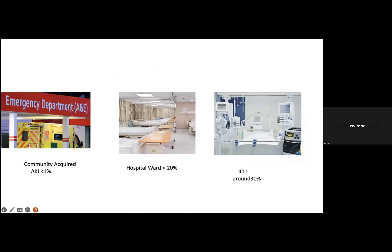We can differentiate acute kidney injury into hospital-acquired and community-acquired. Community-acquired AKI is mainly because of pre-renal causes like dehydration and hypovolemia, and sometimes obstruction. For hospitalized patients, most ICU patients are complicated with acute kidney injury. As clinicians, we should ensure we have early awareness of acute kidney injury to enable appropriate intervention, which will prevent patient mortality and morbidity.